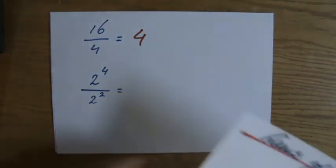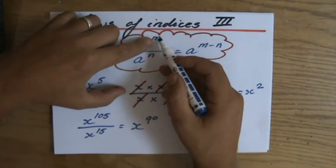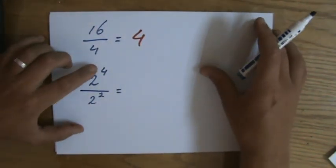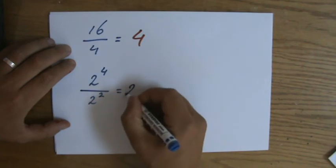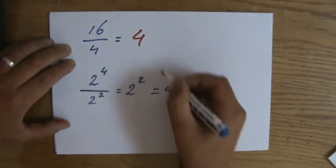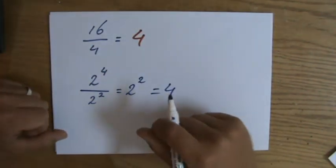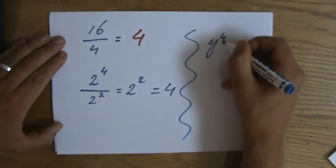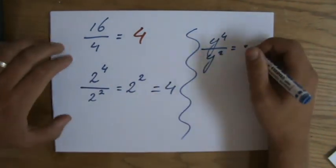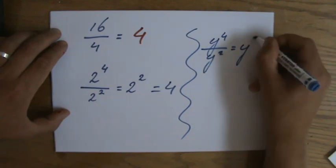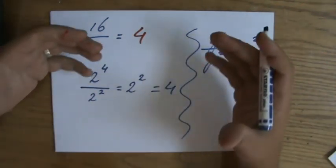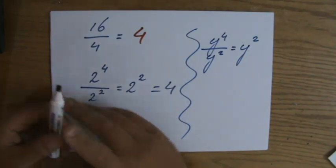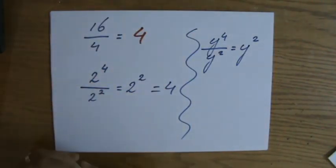The bases are the same. The second law of the indices tells me: if those bases are the same and you are dividing, you subtract the indices. So 4 minus 2 gives 2 to the power 2, and indeed that is 4 — we knew that. So if instead it's y to the power 4 divided by y to the power 2, we understand the answer is y to the power 2, which is 4 minus 2. This shows the relationship between algebra and ordinary numbers — it all makes complete sense. Next video for some example questions involving the second law of the indices. See you there.